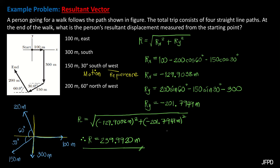For the direction of the resultant, the angle theta can be solved using the formula: theta = arctan(|Ry| / |Rx|). When we say absolute value, all we need to do is make the value positive. Let's substitute our values of Ry and Rx.